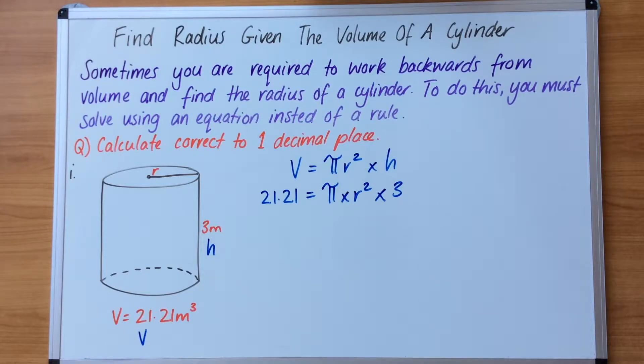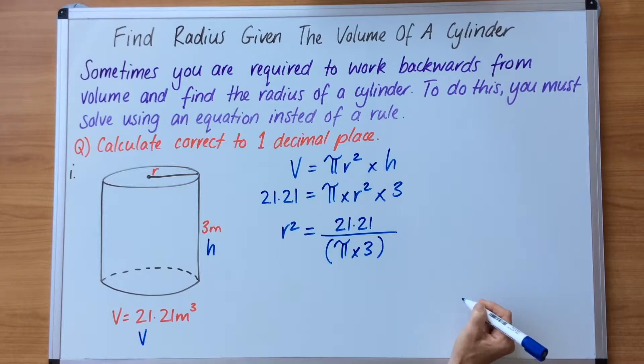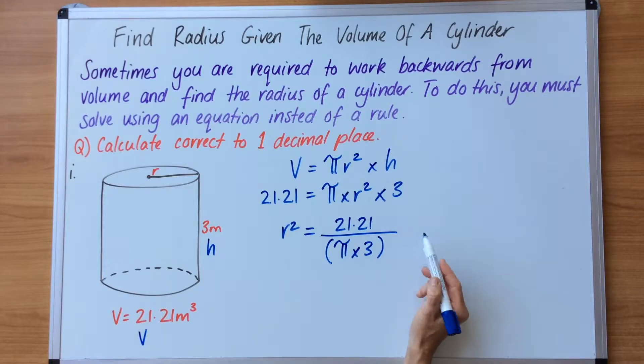Now from there we need to do some rearranging. So watch carefully. We want letters on the left and numbers on the right, because this is now going to become an equation. So I'm going to take the r squared and place it here. Put an equal sign, a fraction line. This 21.21 sits on the top, and the rest of it goes underneath. So pi times 3 and that has to go in a bracket.